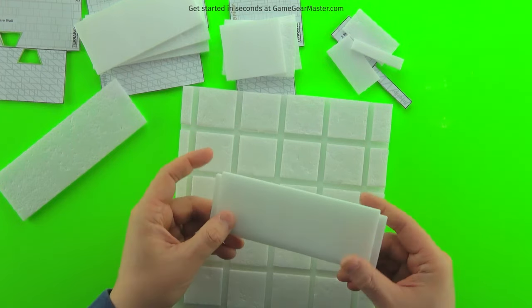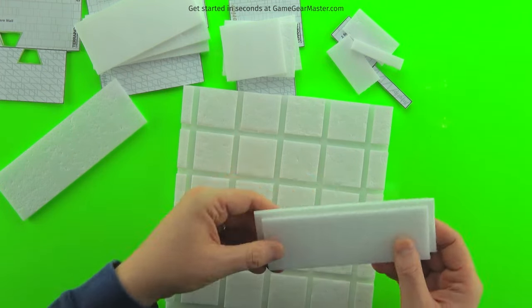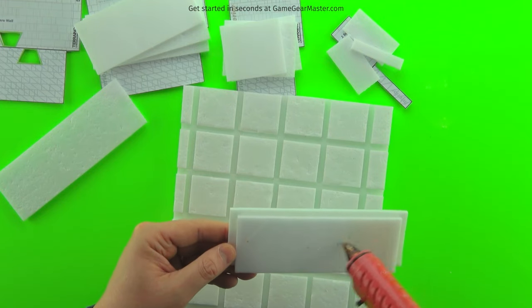You can see the two sides here are even or close enough to being even. And then we're just going to add the other wall on the other side and then it's done.